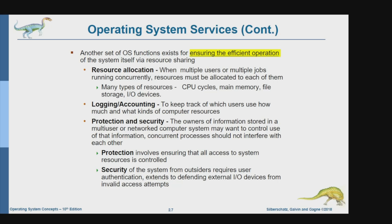Next we have logging and accounting. This is in order to keep track of which user uses how much and what kind of computer resources, in order to manage resource allocation. It can be identified by logging and the account of the user. As we learned in Chapter 1, there is a user ID and username inside the operating system. The OS also provides logging and accounting to keep track of resource usage.